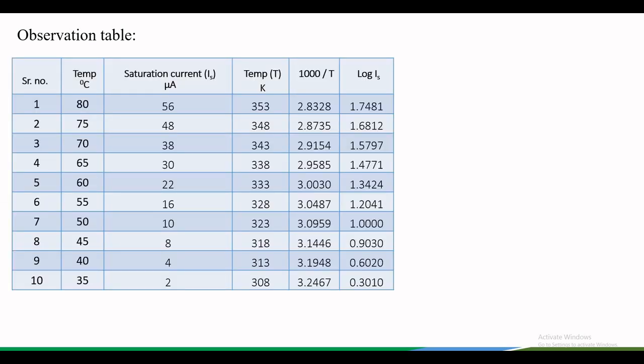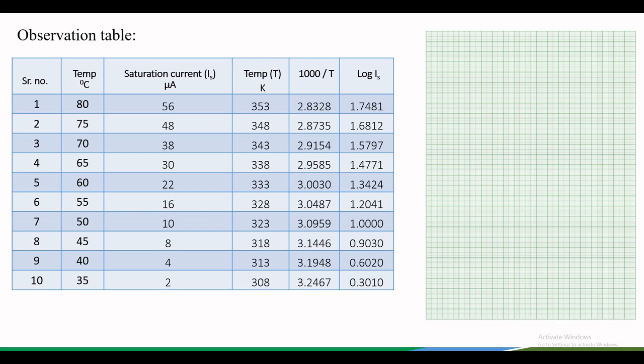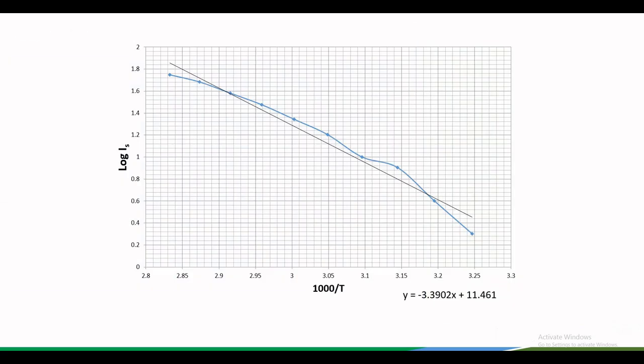From this observation table, we need to plot a graph. All the points taking 1000 by T on x-axis and log of Is on y-axis will appear something like this. From this graph, we take the slope by plotting the points x1 and y1 and x2, y2 on the graph. And then we find out the slope, slope equals y2 minus y1 upon x2 minus x1. The graph that we plot will appear something like this and by finding the equation and slope, we will find out the energy band gap value.